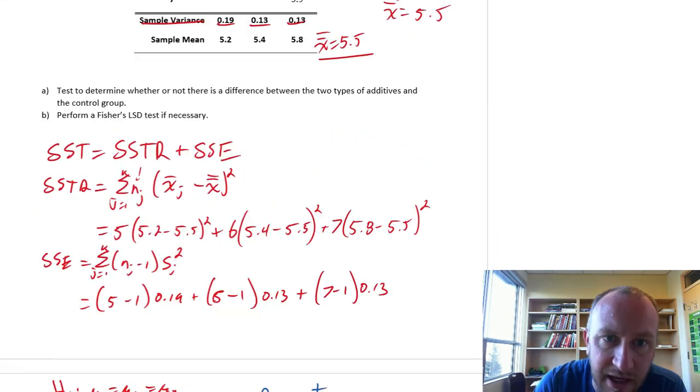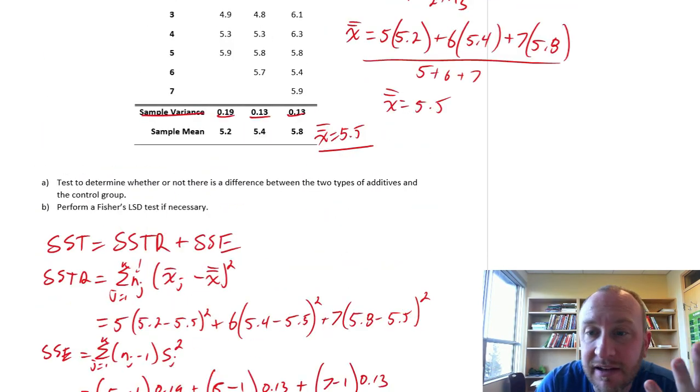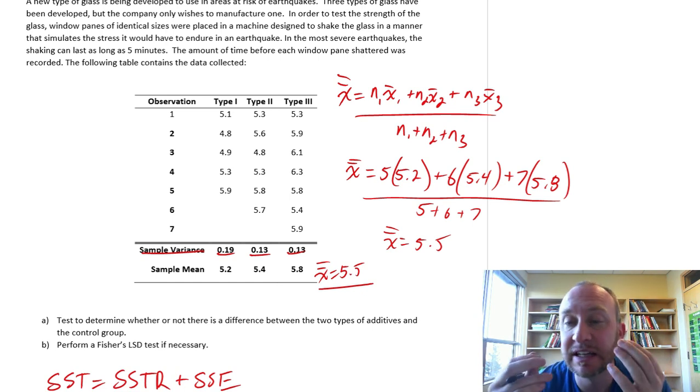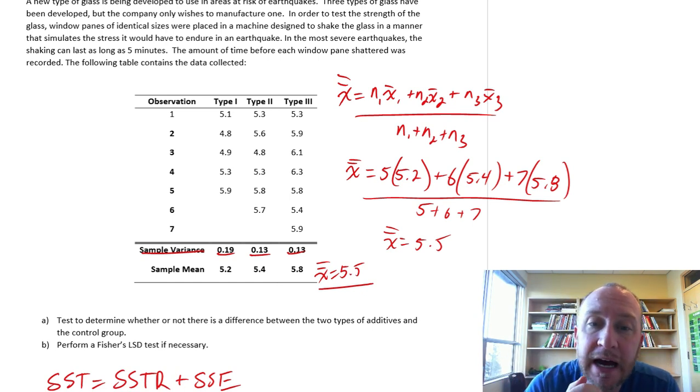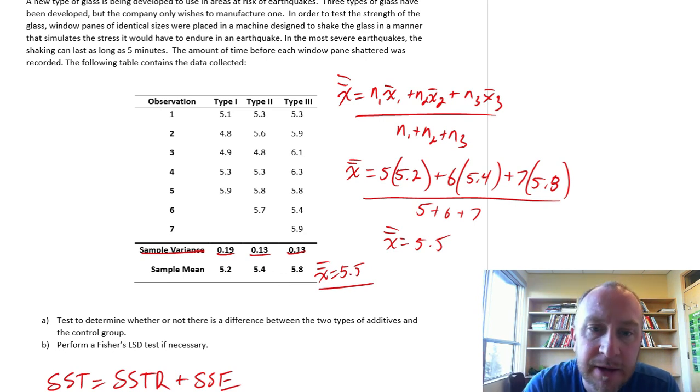So what does that mean? It means we have evidence to show that not all of them are equal. In this case, we're looking at window panes. So there's definitely a statistical difference with at least one of these different window panes. Now the joys of small sample sizes and small number of treatments is that we have the luxury, you can probably look at these numbers and take a pretty good educated guess which one it might be. But for the sake of practice,